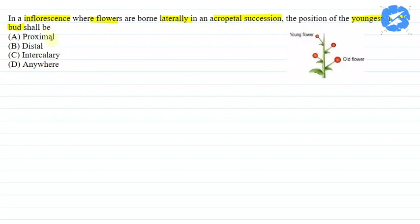So we have asked this question. There is an inflorescence where flowers are born laterally in an acropetal succession and we will tell you that the position of the youngest floral bud will be where. So first, let's look at these options.